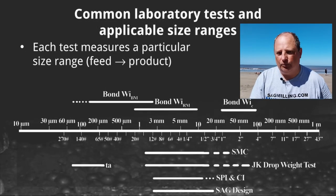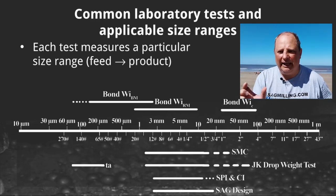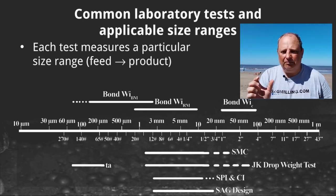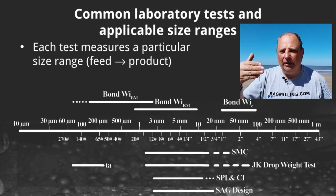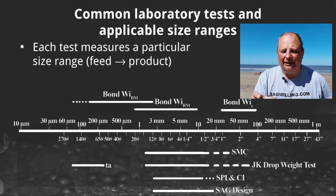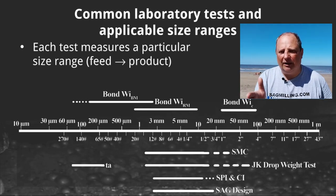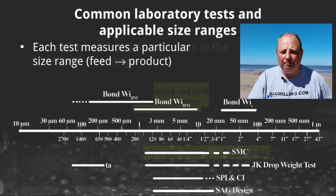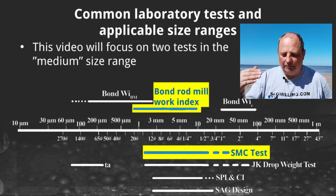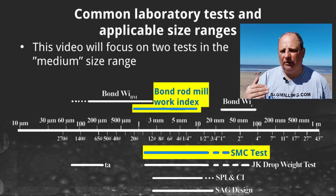Another way of viewing that is with this ruler where you can see the Bond tests are up on the top and other tests are down below. Each line on the ruler represents the approximate F80 feed size going into a particular laboratory test and the approximate P80 product size coming out. The crushing work index test is fed particles of about 50 to 75 millimeters, producing about 20 to 30 millimeters. The rod mill work index feeds about 12.5 millimeters and produces around 1 millimeter. The ball mill test starts at about 3 millimeters. The SMC test sits just below the ruler and really overlaps with the rod mill work index test.